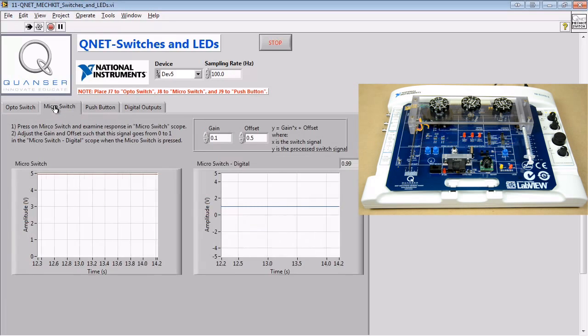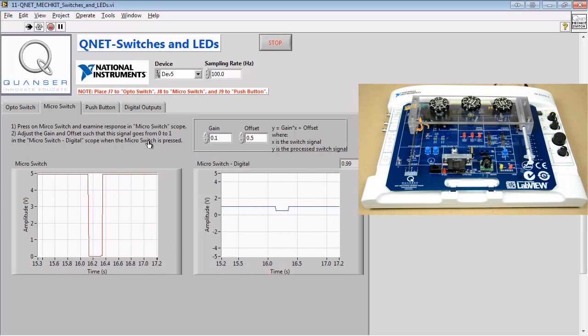Next, we'll observe the response to the micro switch being pressed. We'll adjust the gain and offset values to generate a digital output with values ranging from 0 to 1.